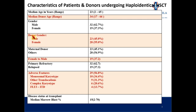The median age was 23 years, varying from 2 to 65. The maternal donor was 45%. Primary refractory disease was 63%, and 37% of patients had relapsed disease. 57% of patients had adverse features in the form of monosomy, complex karyotyping, and FLT3 mutation.